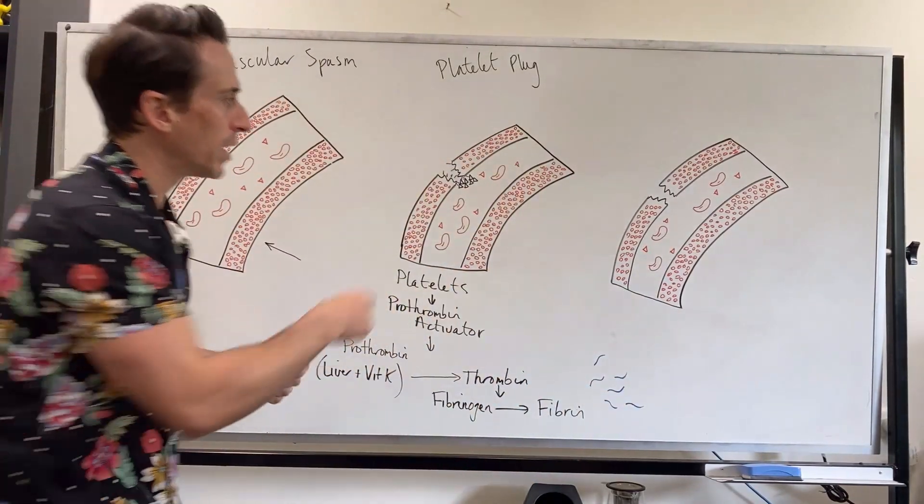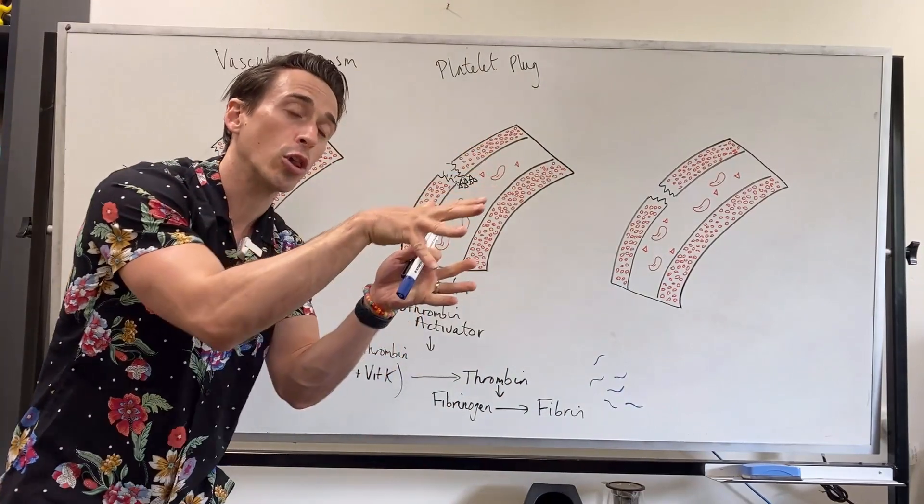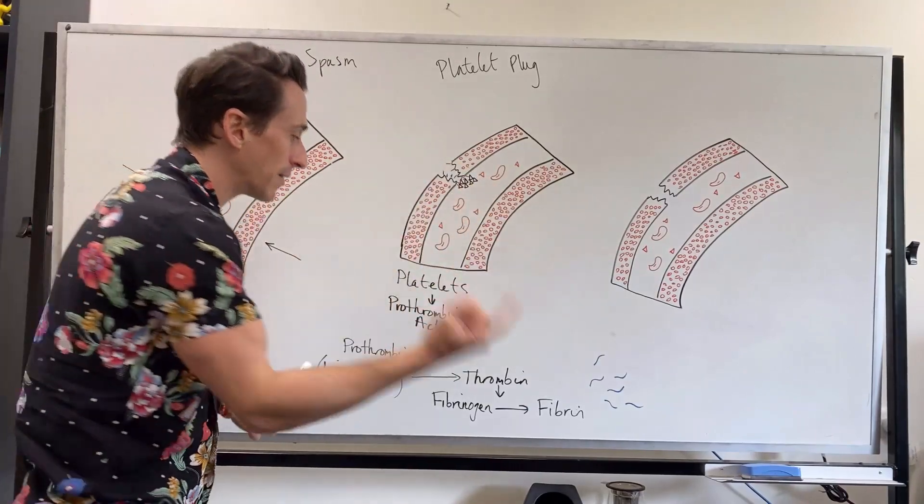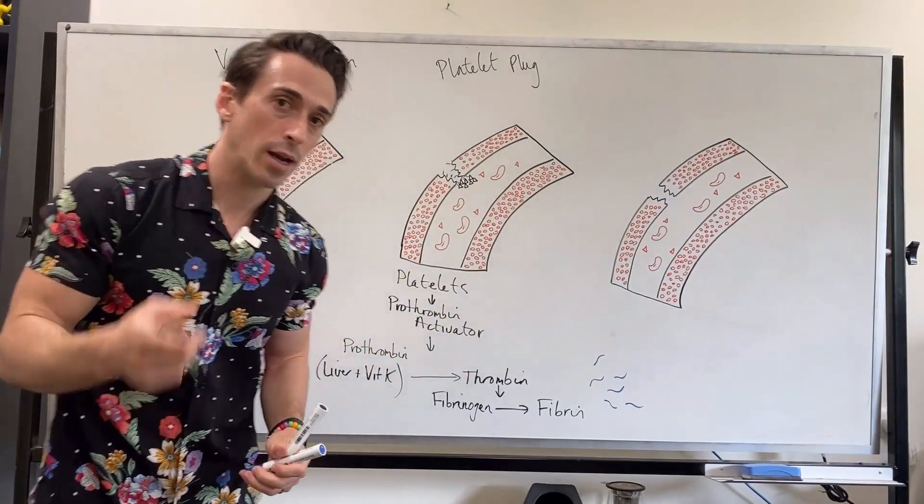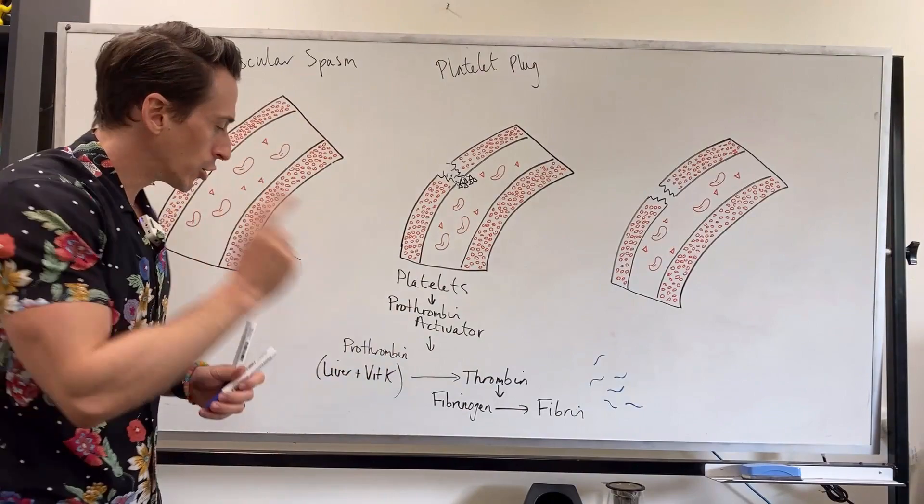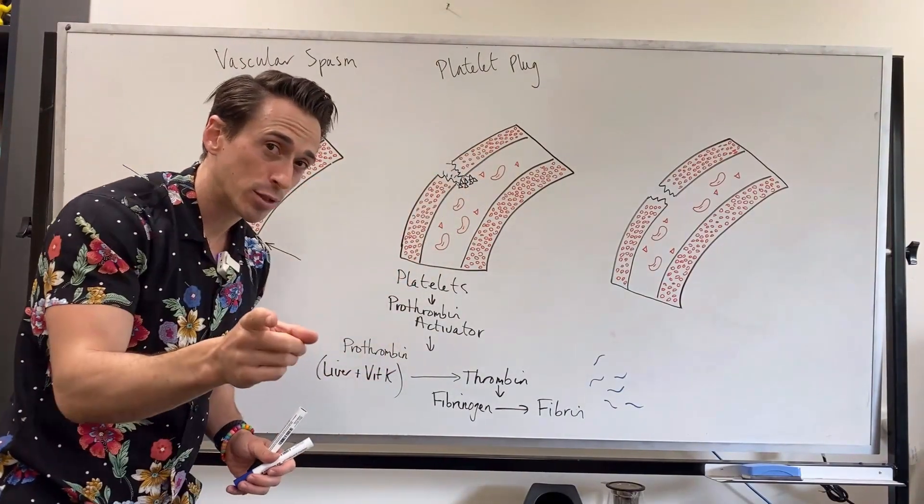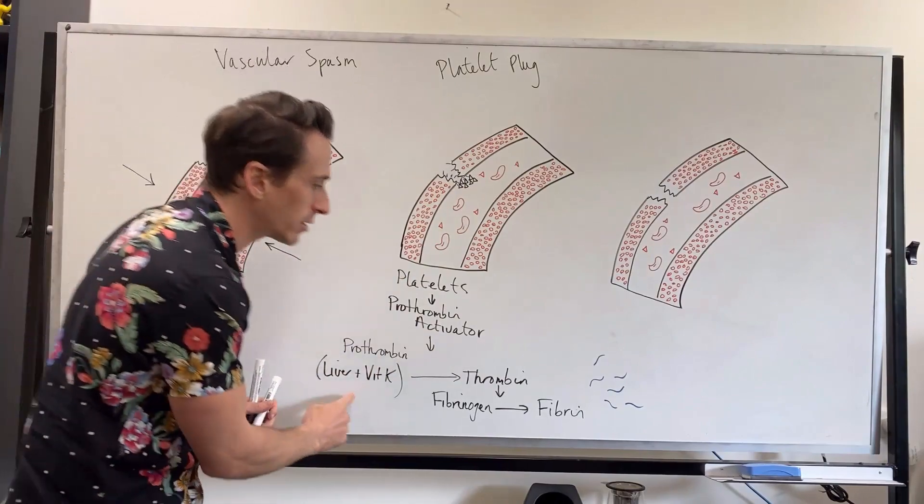All right, so let's just go through this quickly. Platelets stick to the exposed collagen from the damaged blood vessel wall. Platelets then get activated and they release something called prothrombin activator. Prothrombin activator turns prothrombin, which is floating through and produced in the liver and is vitamin K dependent, into something called thrombin.